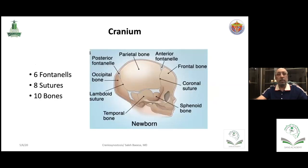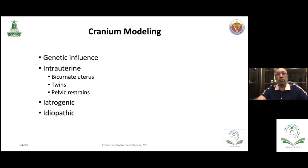At birth, you end up with the classic cranial anatomy with thin bones separated by eight sutures, and there are up to six fontanelles — the most important with clinical significance is the anterior one. Cranial modeling varies genetically between individuals, transmitted by parents across generations. However, there are some intrauterine factors that can model the skull into an abnormal shape — not necessarily craniosynostosis — like abnormal uterine anatomy, twins, or pelvic restraints.